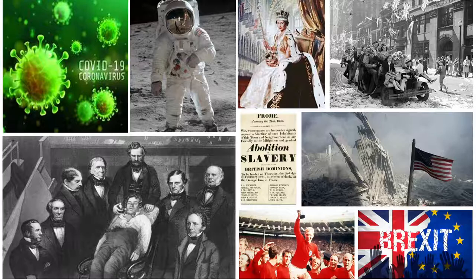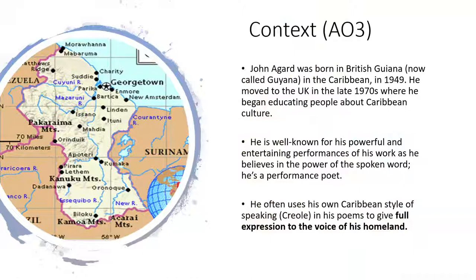Let's have a look at the context surrounding the poet and the ideas in this poem. John Agard was born in British Guyana in the Caribbean in 1949. He grew up there, then moved to the UK in the late 1970s. One of the things he's achieved through his writing is that he educates people about Caribbean culture. A lot of his poems explore the idea of his identity as someone who grew up in the Caribbean. He's well known for his powerful and entertaining performances of his work, as he believes in the power of the spoken word.